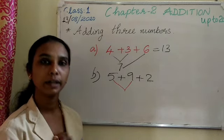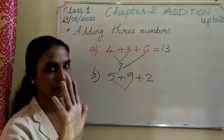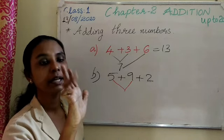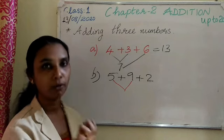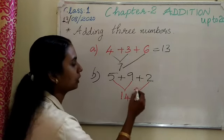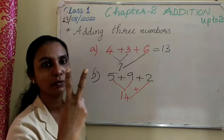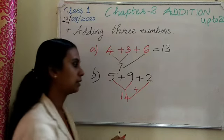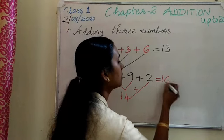It is a bigger number, 9. So keep 9 in your mind, 5 on your finger. After 9, 10, 11, 12, 13, 14. 14 plus third number. 14 plus 2. 14 in your mind, 2 finger. After 14, 15, 16. So the sum is 60.